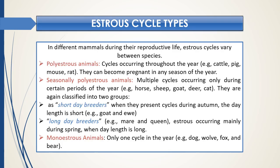In different mammals during their reproductive life, they exhibit estrus cycles and the duration of the cycle varies between species. Some animals are polyestrous, meaning cycles occur throughout the year. Examples include cattle, pig, mouse, and rat — they can become pregnant in any season of the year.